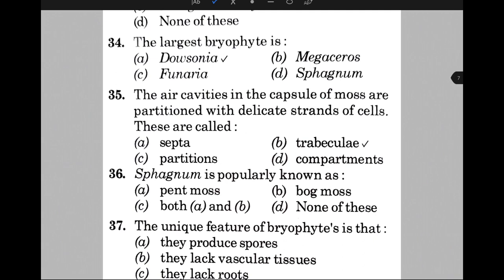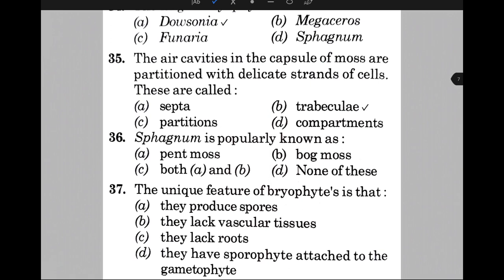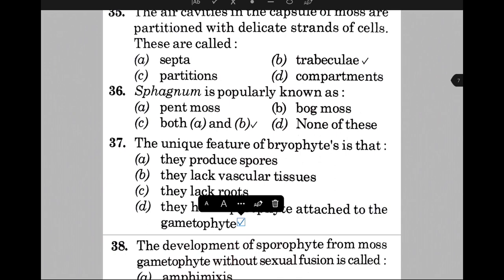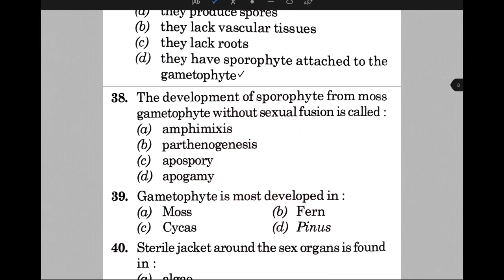Sphagnum is popularly known as — the answer is C, that is both peat moss and bog moss. The unique feature of bryophytes is that they have the sporophyte attached to the gametophyte — option D. The development of sporophyte from moss gametophyte without sexual fusion is called — the answer is D, that is apogamy.